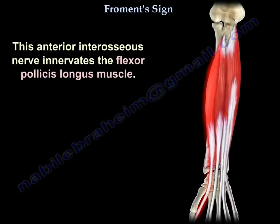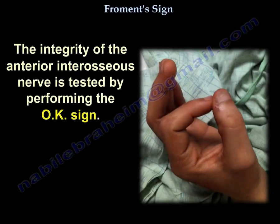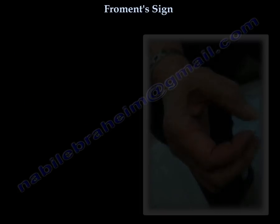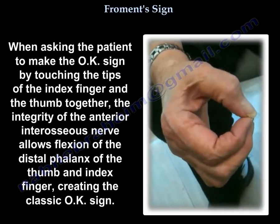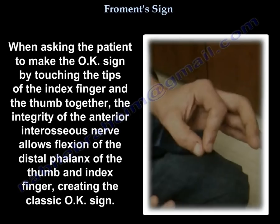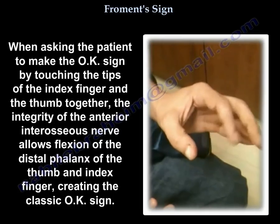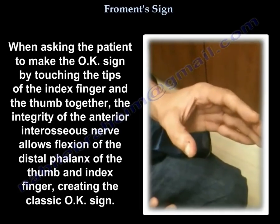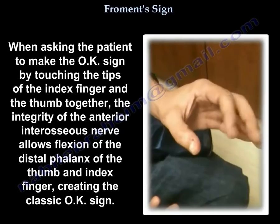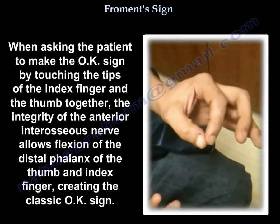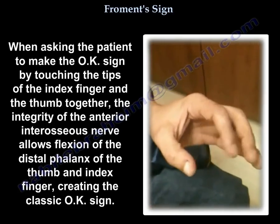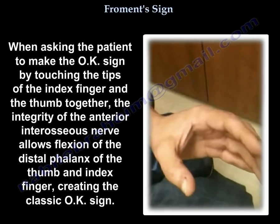The anterior interosseous nerve innervates the flexor pollicis longus, and the integrity of the anterior interosseous nerve is tested by performing the OK sign. When asking the patient to make the OK sign by touching the tips of the index finger and the thumb together, intact anterior interosseous nerve function allows flexion of the distal phalanx of the thumb and the index finger, creating the classic OK sign.